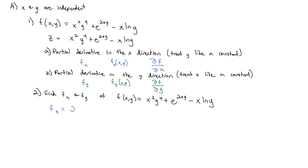On our first term, the derivative of x squared is 2x, and y to the fourth, like any constant, gets tacked on. Plus, the derivative of e to the stuff is e to the stuff times the derivative of the stuff. If y is constant, 2y is constant, the derivative of x is 1, leaving just 2y. Minus, the derivative of x is 1, and natural log of y is constant. We have our partial derivative in the x direction.